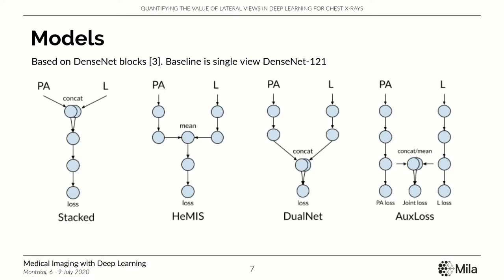For our multi-view models, we test different ways of joining the views. The first is Stacked, where the lateral view is concatenated as a second channel of the PA image. The second is HEMIS: each view is processed by its own independent set of convolutional layers, then the two views are combined by taking the map-wise mean and variance, which are then propagated further through more convolutional layers.